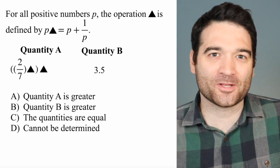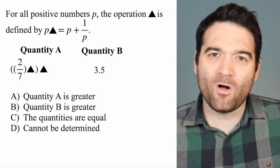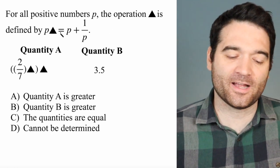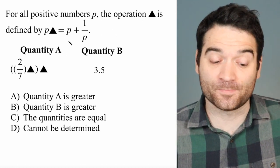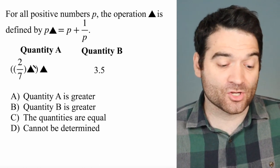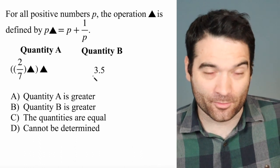Here's a GRE quantitative comparison question. Let's take a look. For all positive numbers P, the operation triangle is defined by P triangle equals P plus 1 over P. And then we have quantity A and quantity B here: 2 sevenths triangle triangle, or 3.5.